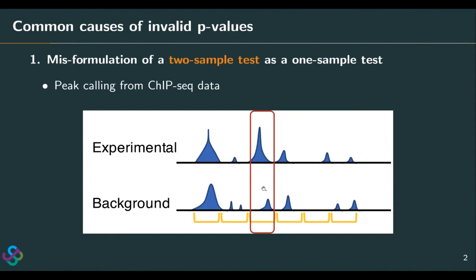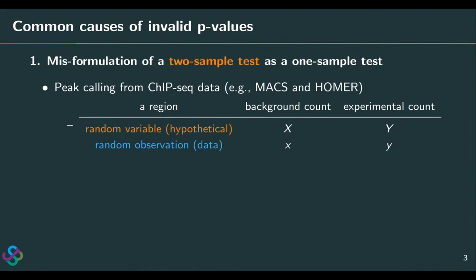If the experimental count is much larger than the background count, we want to call this region a peak — a potential protein binding site. In two popular softwares, Macs and Homer, their statistical formulation can be simplified as this, although what they did in reality is a lot more complicated. But this simplification captures the statistical essence of their method.